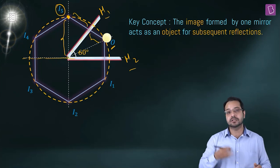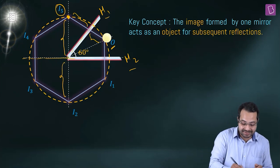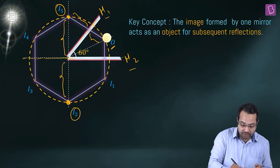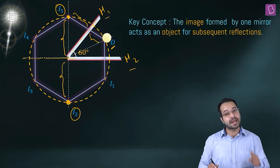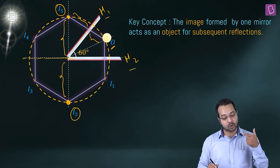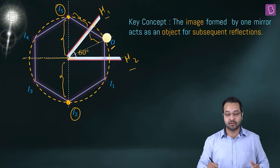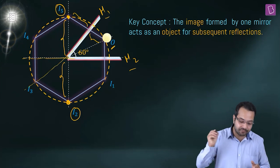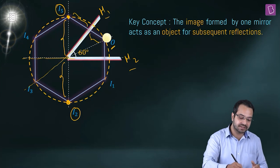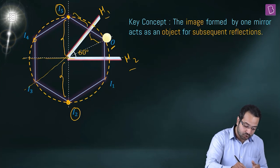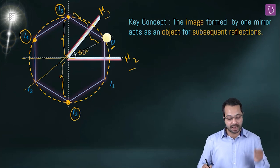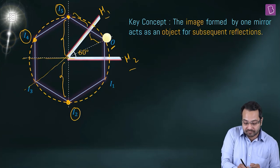This becomes the object distance for M2, and the image distance is equal, so the image is formed here. This image formed by M2 acts as an object for M1 again. Object distance equals image distance, so another image is formed, and this acts as an object for M2.